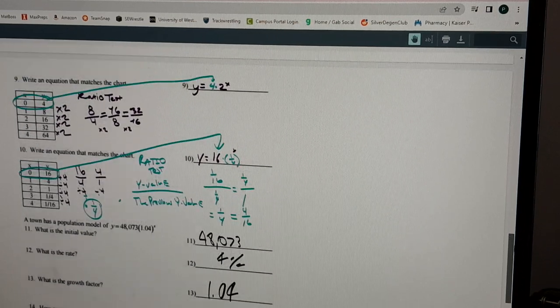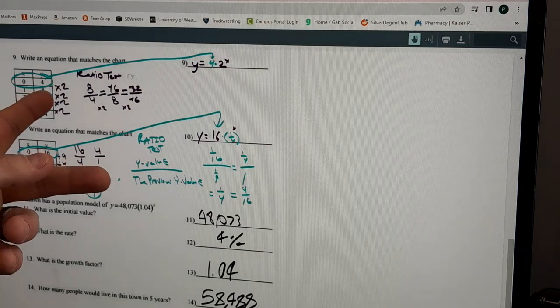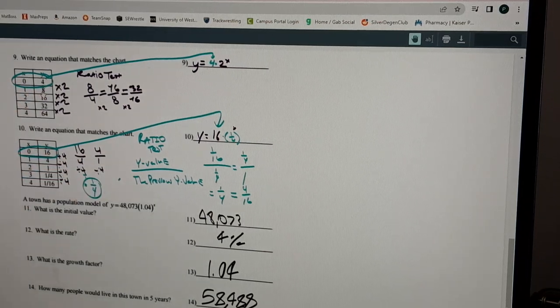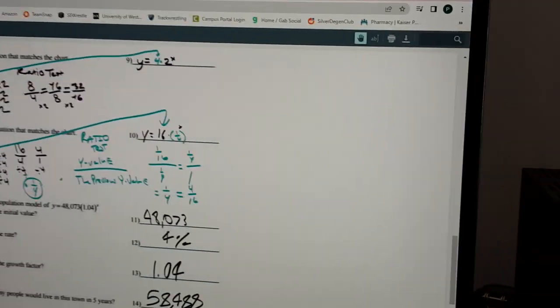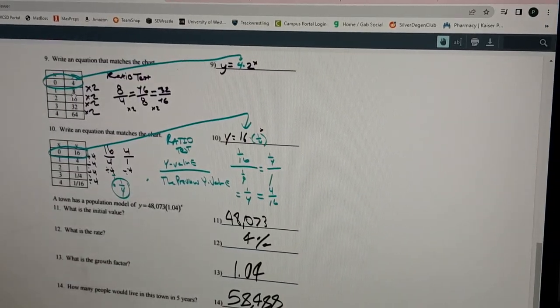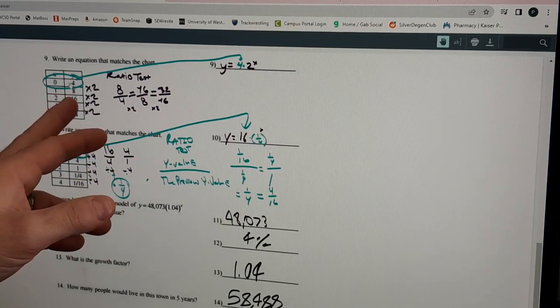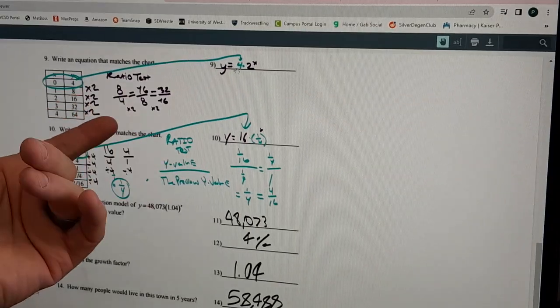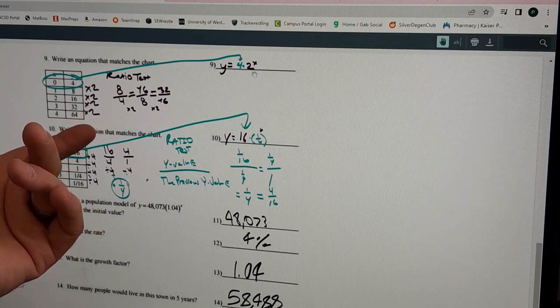Scrolling down here, all this is still kind of the same. You have your initial value of 4, they're doubling, all right. Your initial value 0, 4 - it's also the y-intercept, so that goes in front. You can see that they're timesing by 2, so that's your base is a 2, and that's your equation.